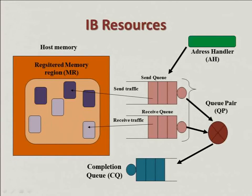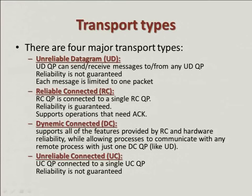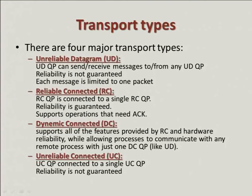Now we have transport types. There are four major transport types in InfiniBand. First is UD — unreliable datagram. A UD QP can send and receive messages to or from any other UD QP. Reliability is not guaranteed and each message is limited to one packet. Second is RC — reliable connected. An RC QP is connected to a single RC QP. Reliability is guaranteed; it supports operations that need acknowledgement, with integrity and reliability, kind of like TCP but at a much lower level.